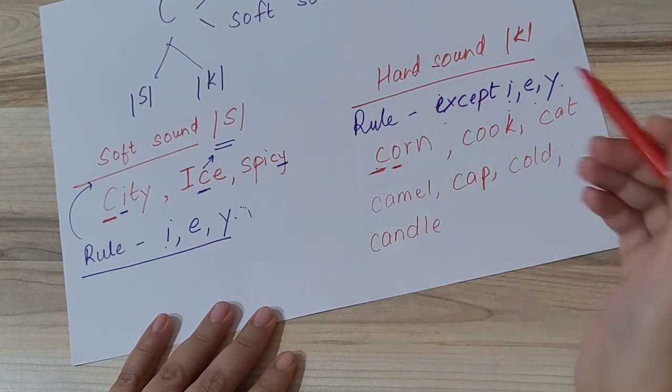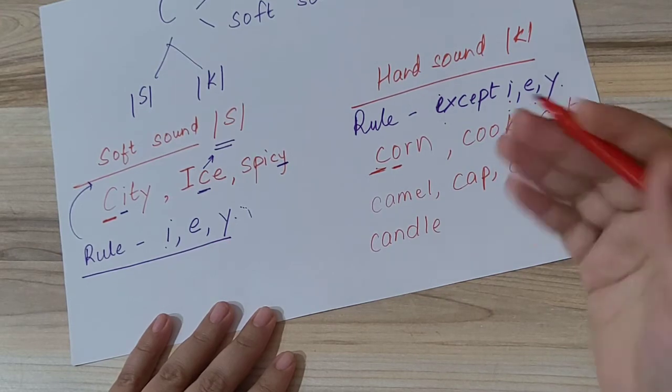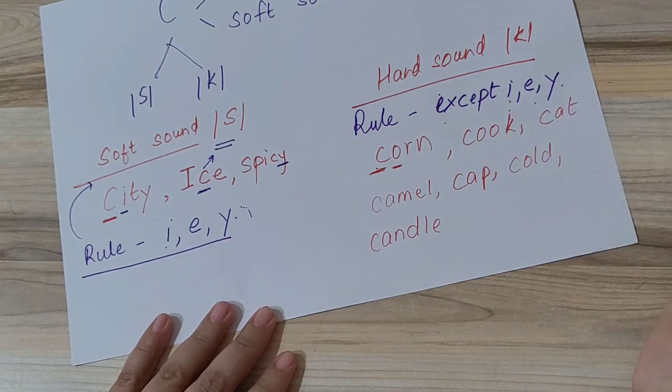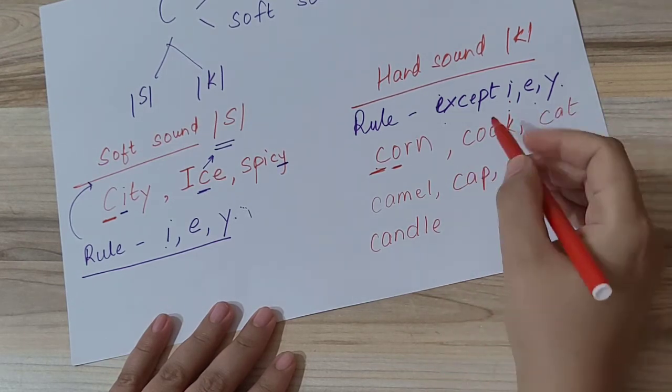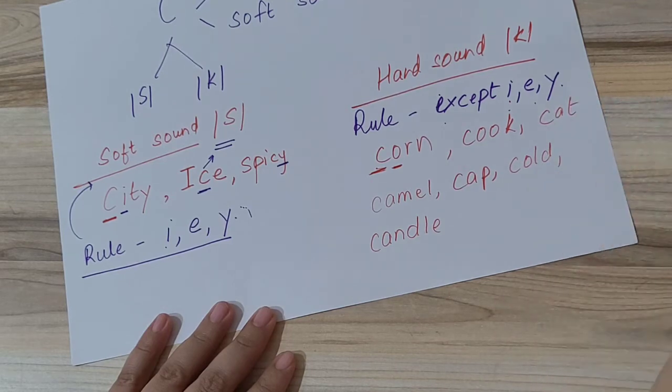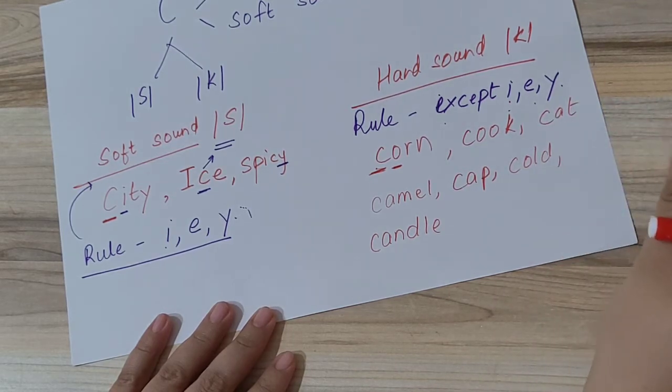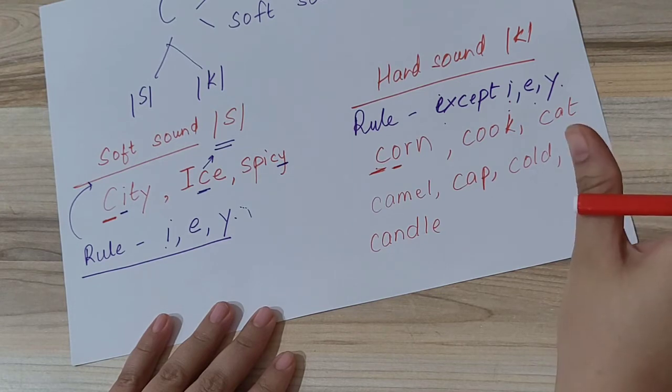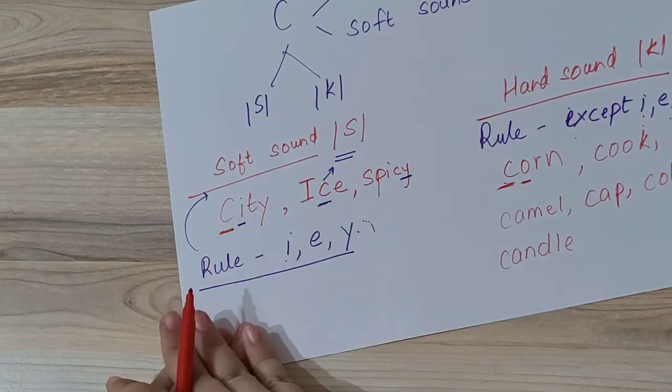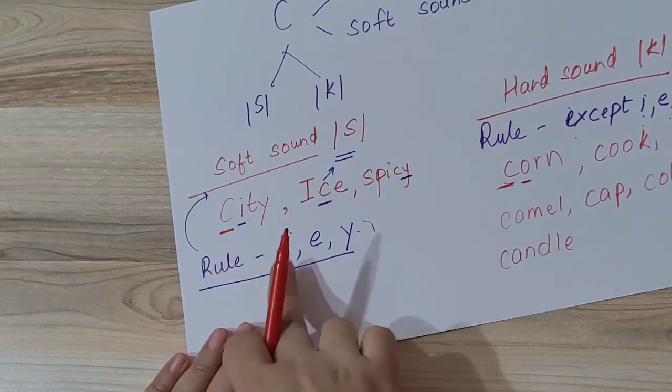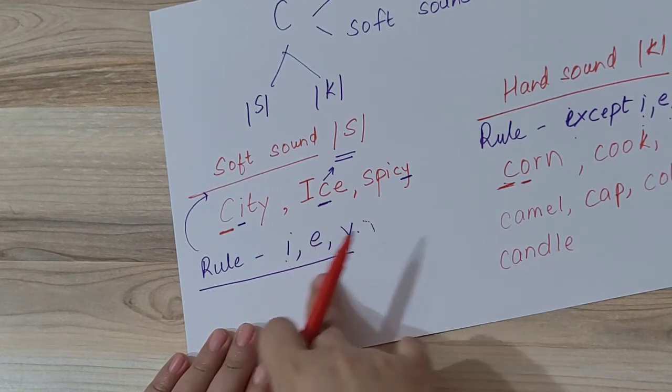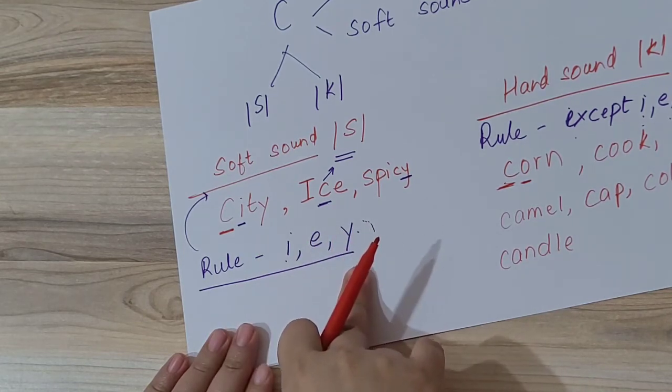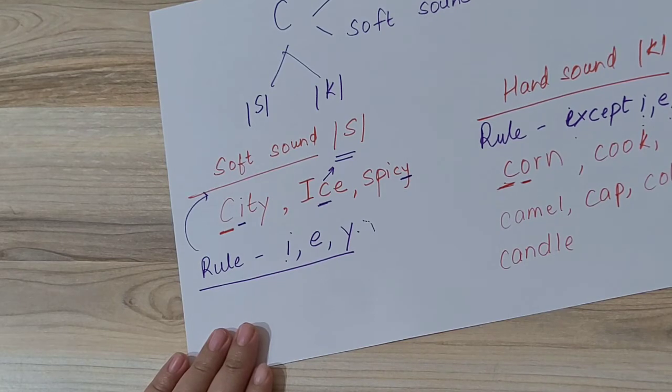So this is the rule for hard sound of letter C. In all those words where letter C is not followed by I, E, and Y, we will pronounce letter C's sound as 'ka'. And all those words in which after letter C, I, E, and Y comes, in those words we will pronounce the soft sound of letter C, that is 'sa'.